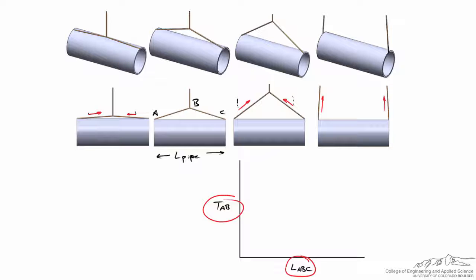One thing we know is that the length L_ABC can't be less than the length of the pipe itself — so here's the length of the pipe on the graph axis. If L_ABC was equal to the length of the pipe, there would be no vertical component of tension in that rope, and the tension would have to be infinitely large, as seen in the far-left diagrams.